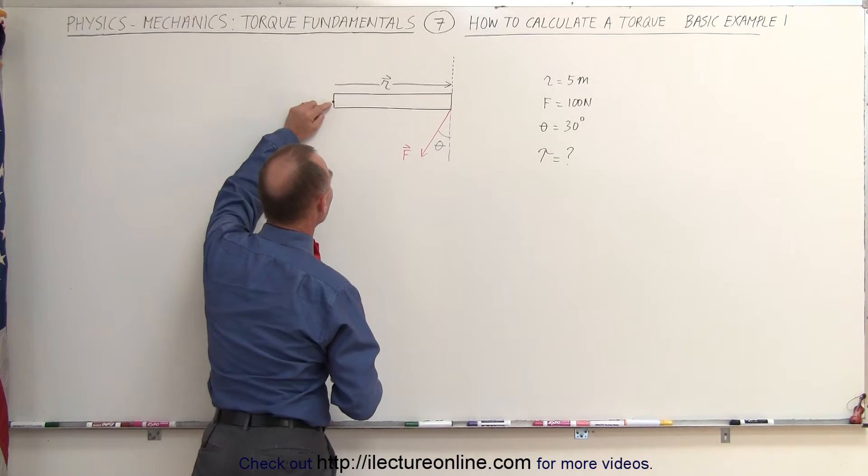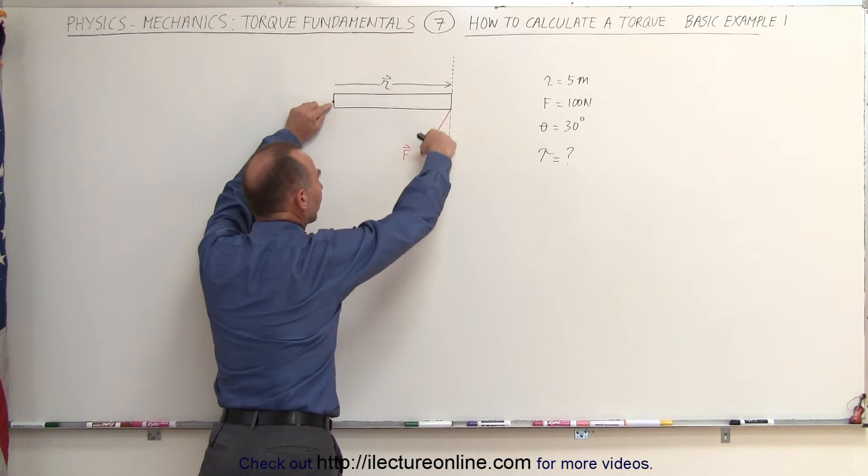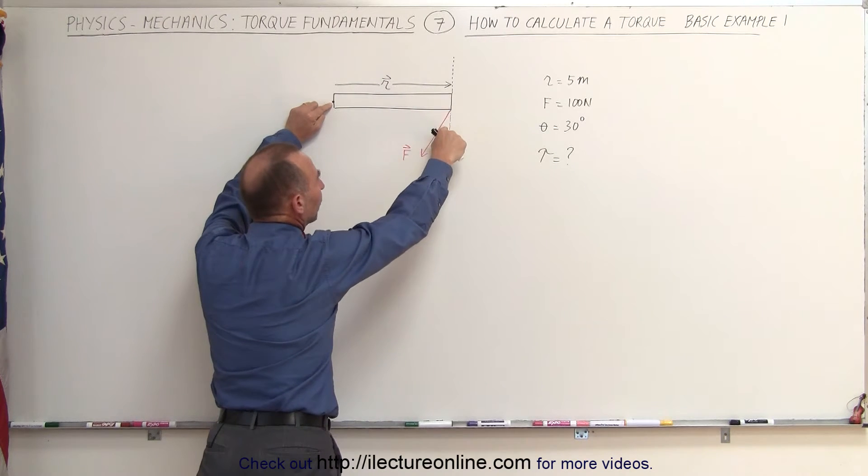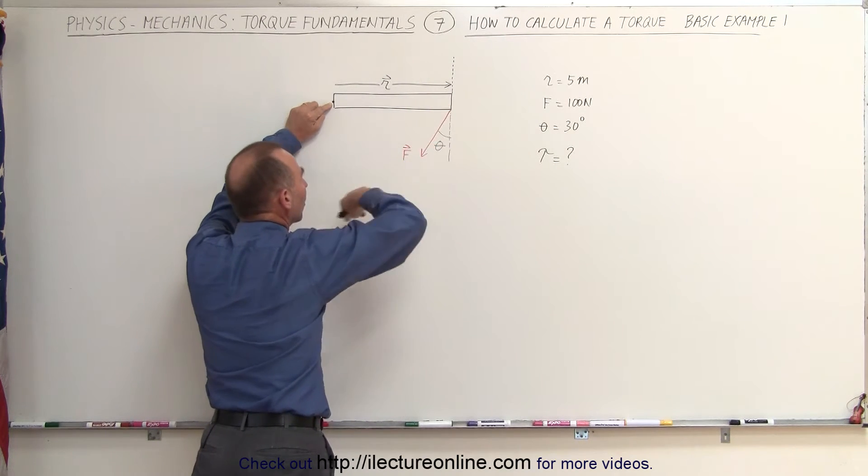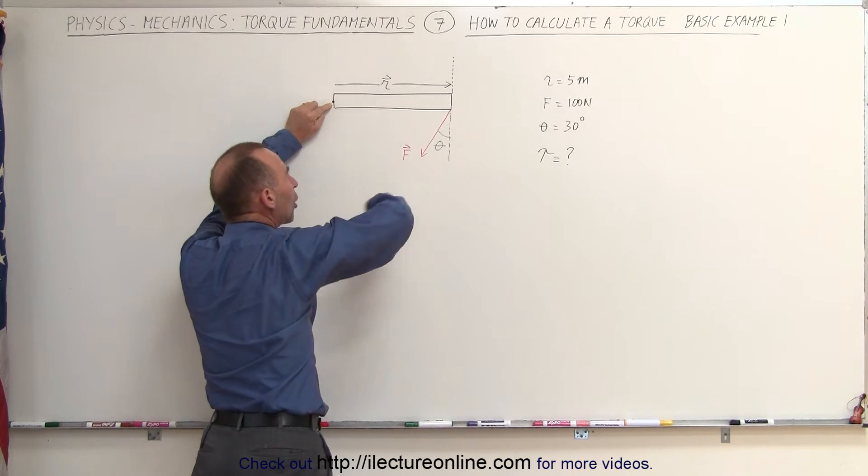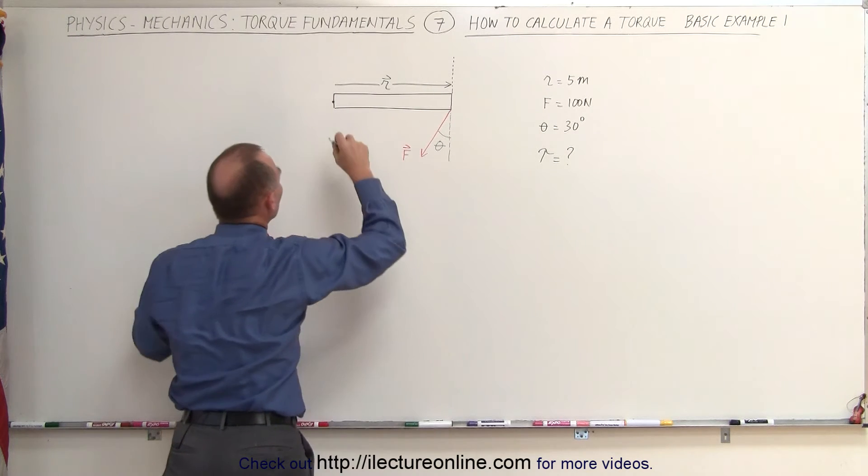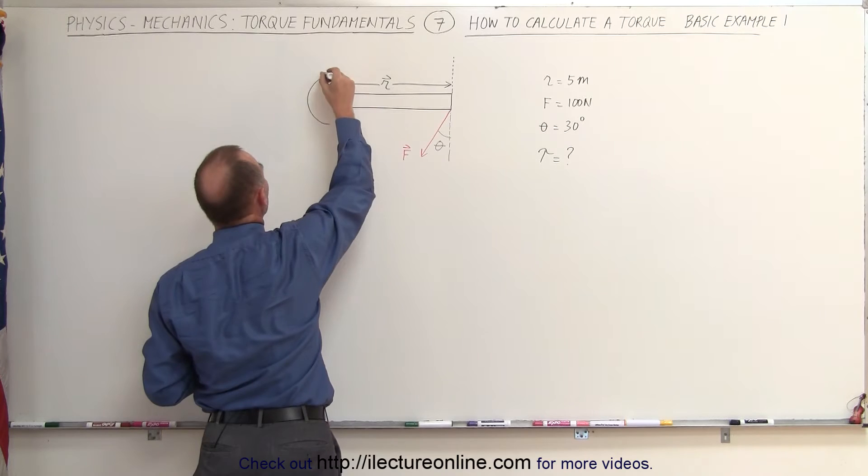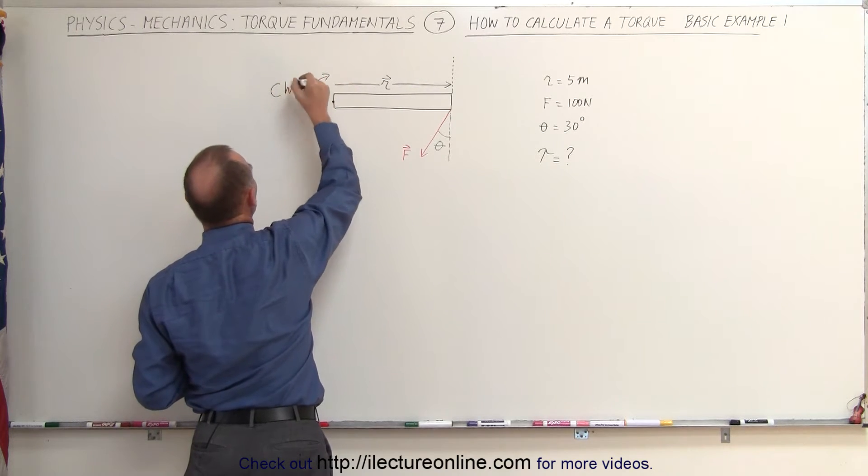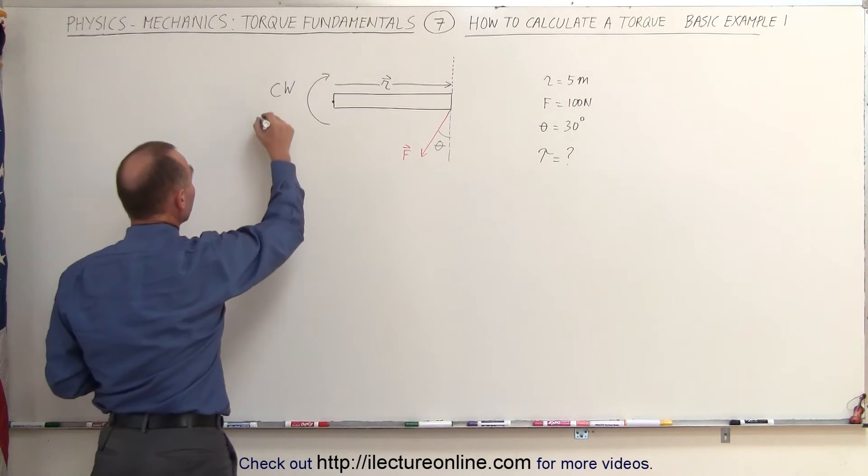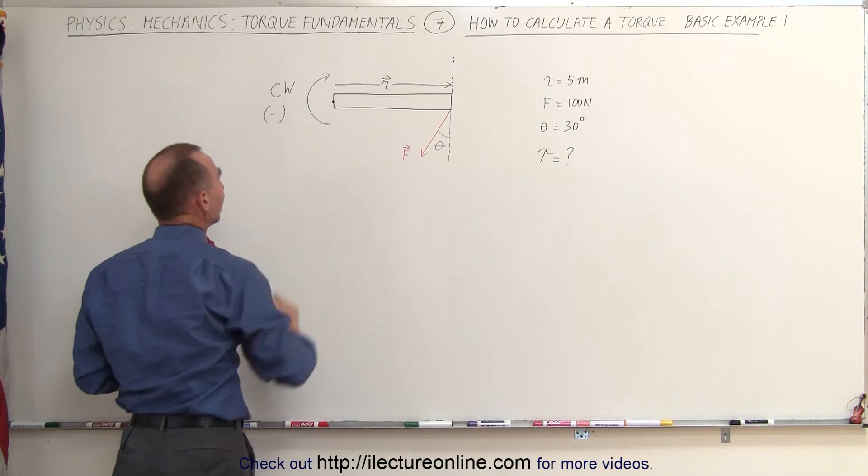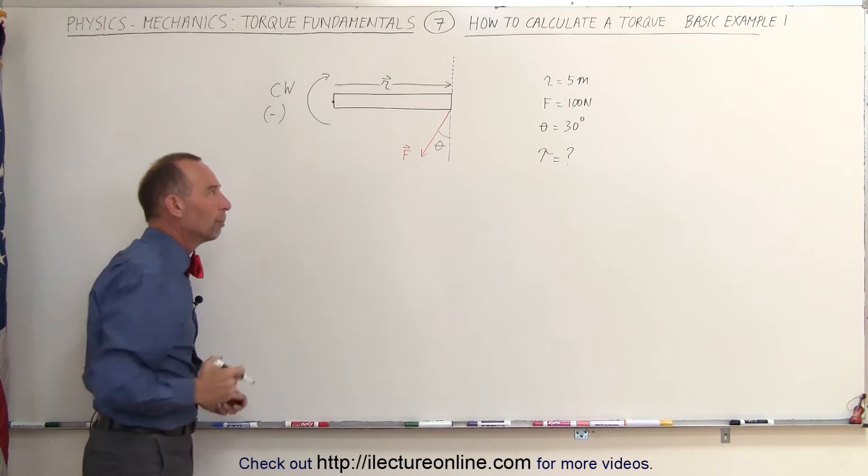Based on the pivot point being here and how the force is acting, if this was the only force on this object, it would cause the object to rotate in a clockwise direction, which means this gives you a clockwise torque. In other words, it's going to be a negative torque. Clockwise means a negative torque or into the board.